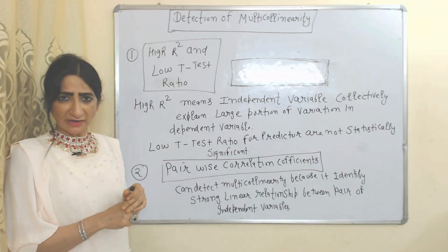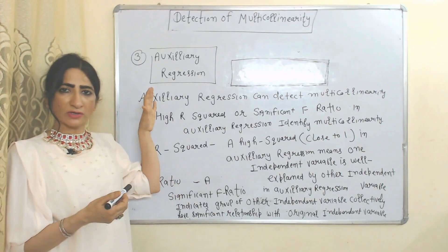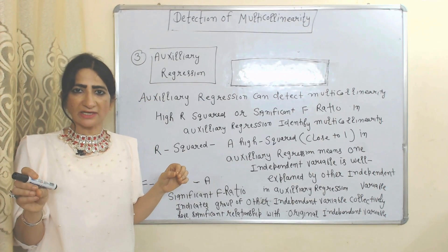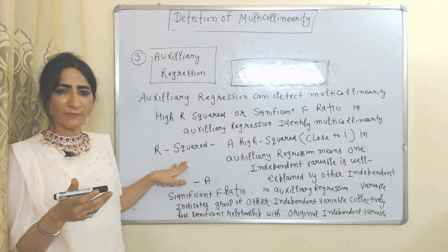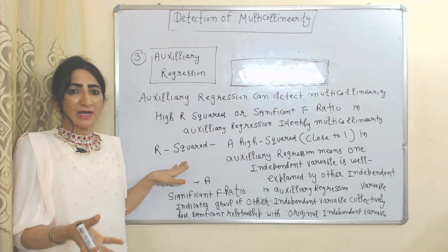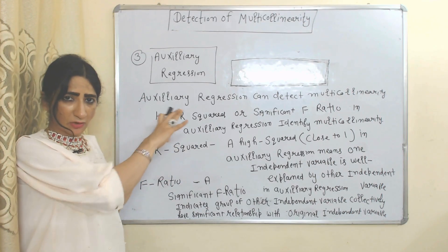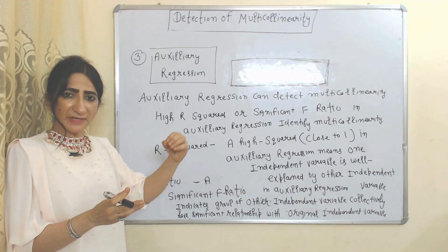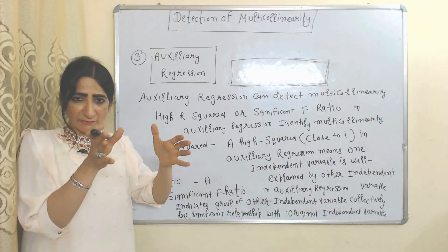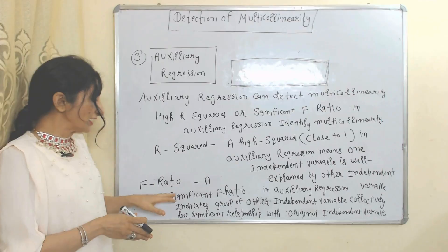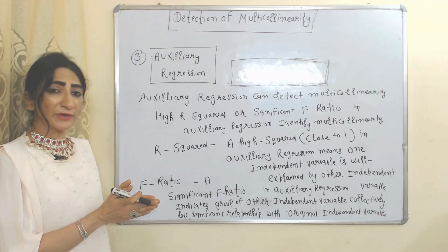Pairwise correlation coefficient can also detect multicollinearity because it explains the strong linear relationship between pairs of independent variables. Auxiliary regression can also detect multicollinearity through high R-squared and significant F-ratio. A high R-squared value in the auxiliary regression model — closer to 1 — means one independent variable is well explained by another, indicating they are highly correlated and eventually leading to multicollinearity.